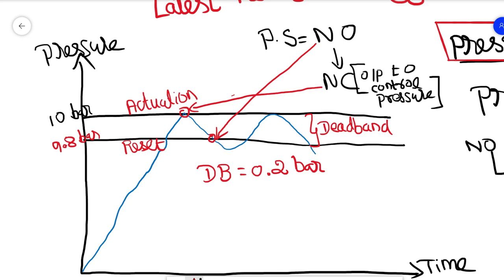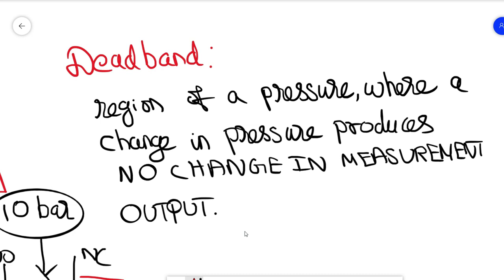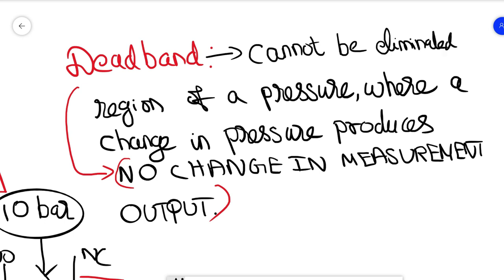So let's get to the definition again. So deadband is a region of pressure where a change in pressure produces no change in measurement output or control signal. All switches have this differential action, that is the deadband action, because it is inherent in any snap switch, right? The differential action of deadband cannot be eliminated.